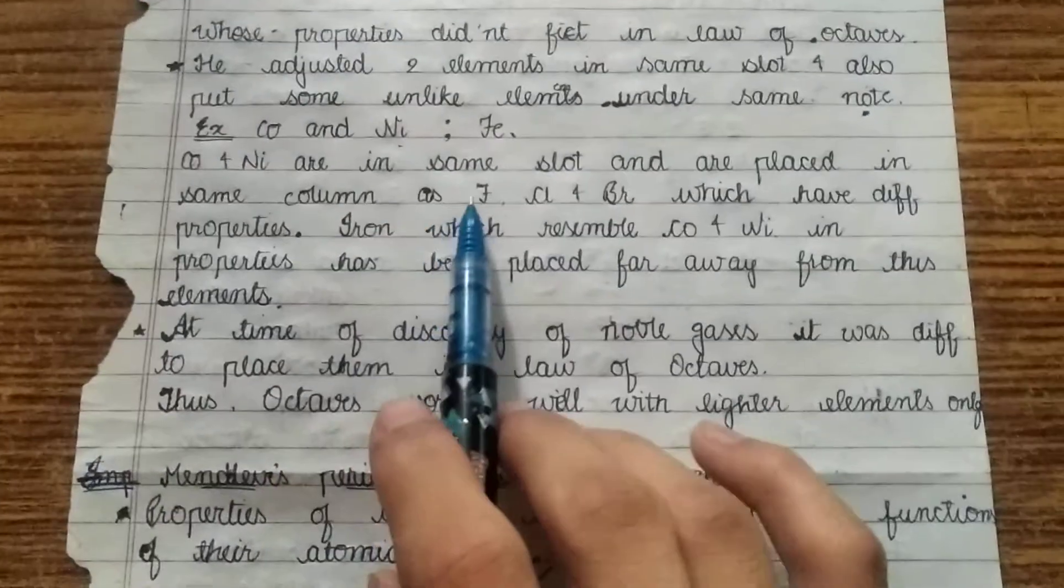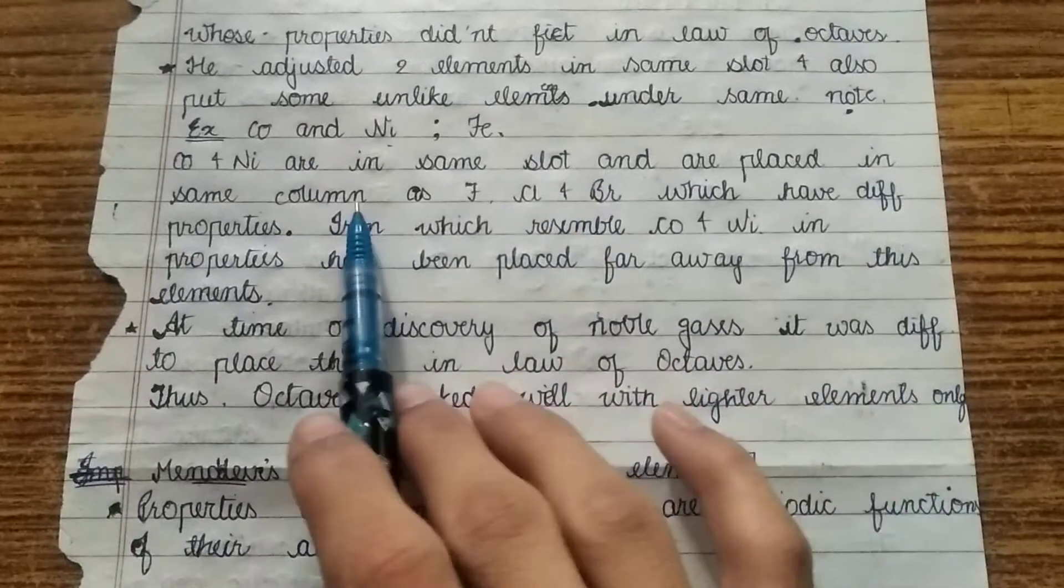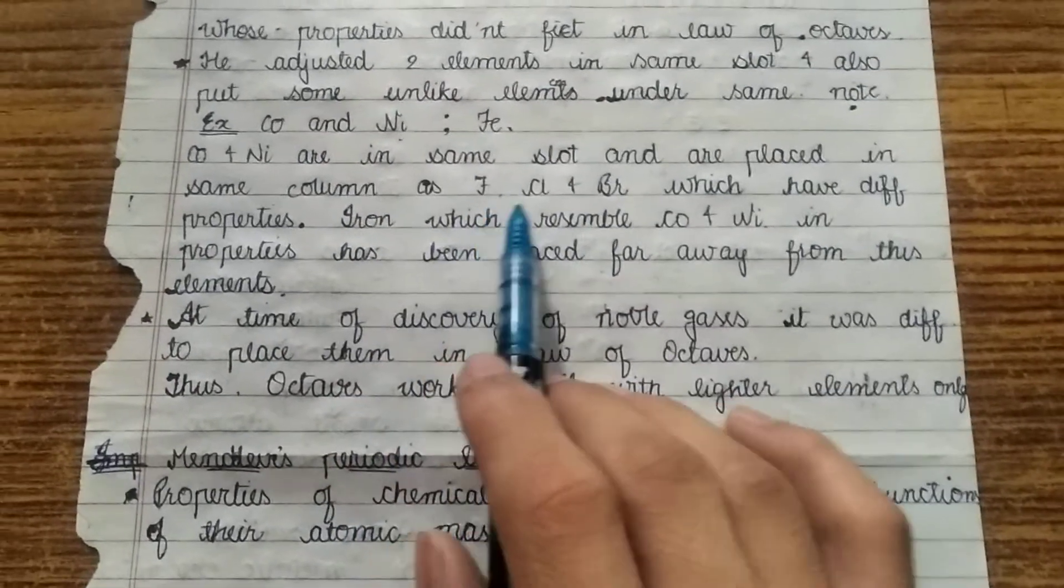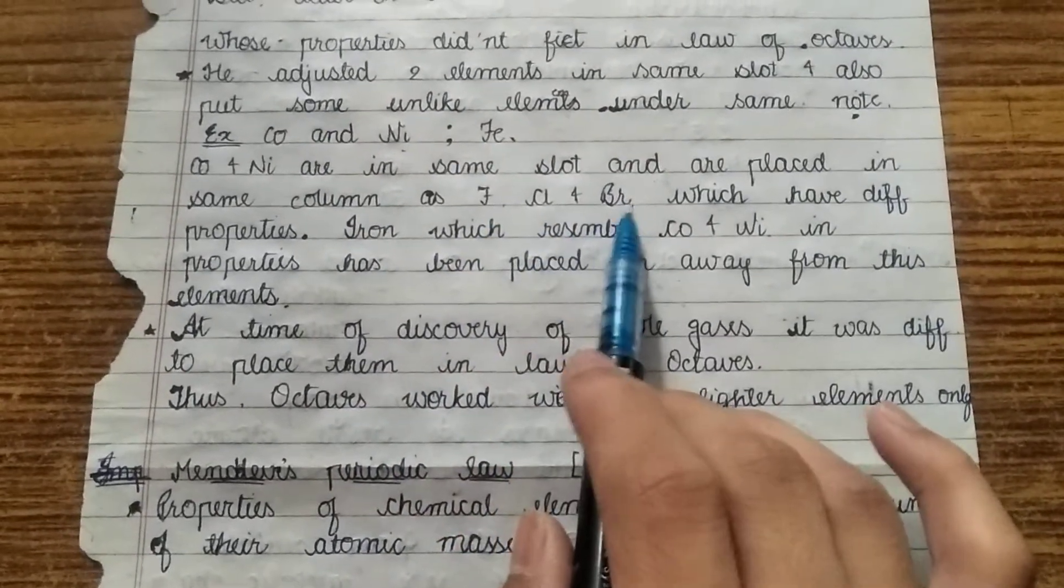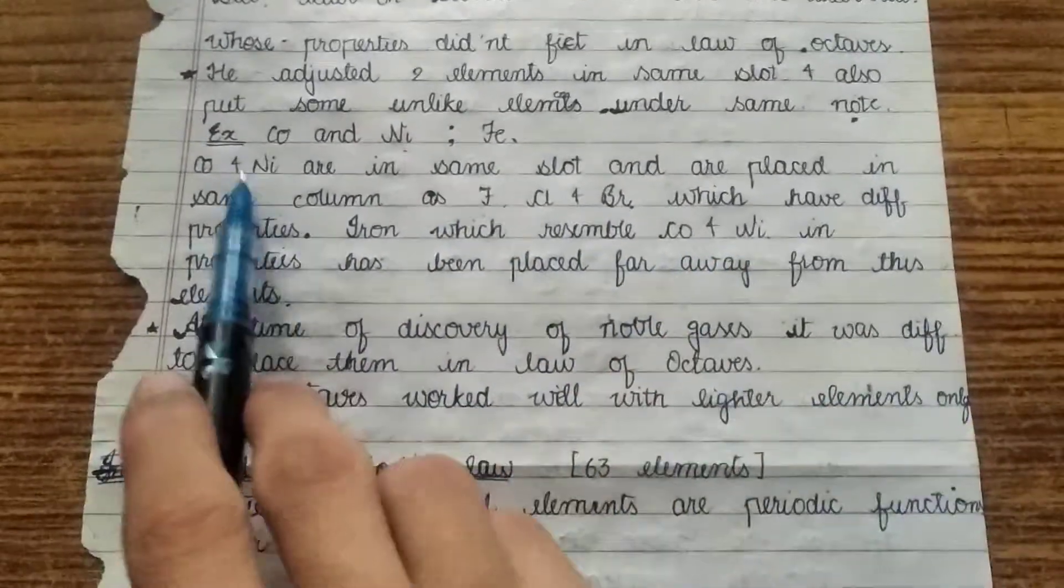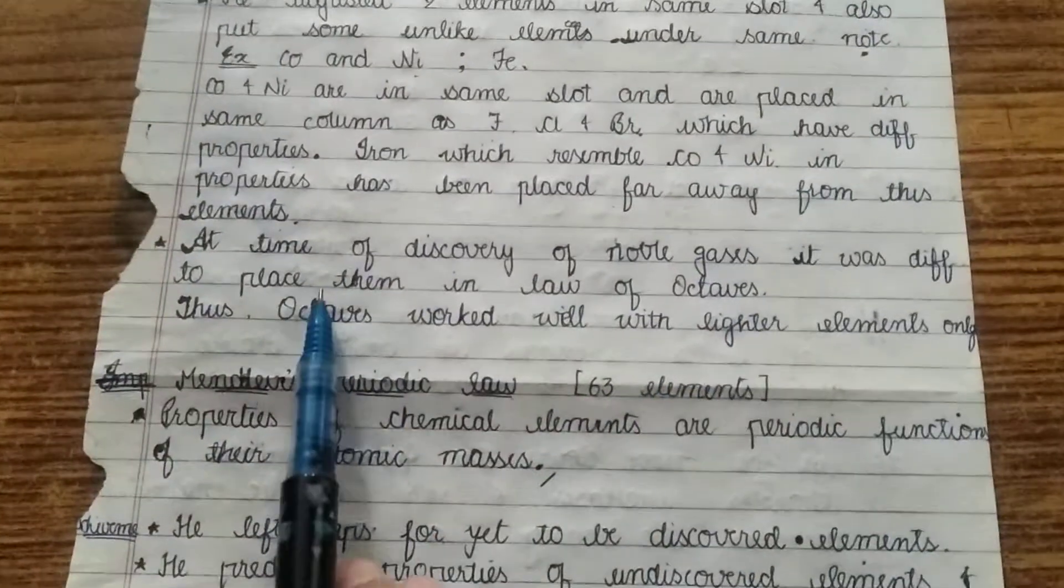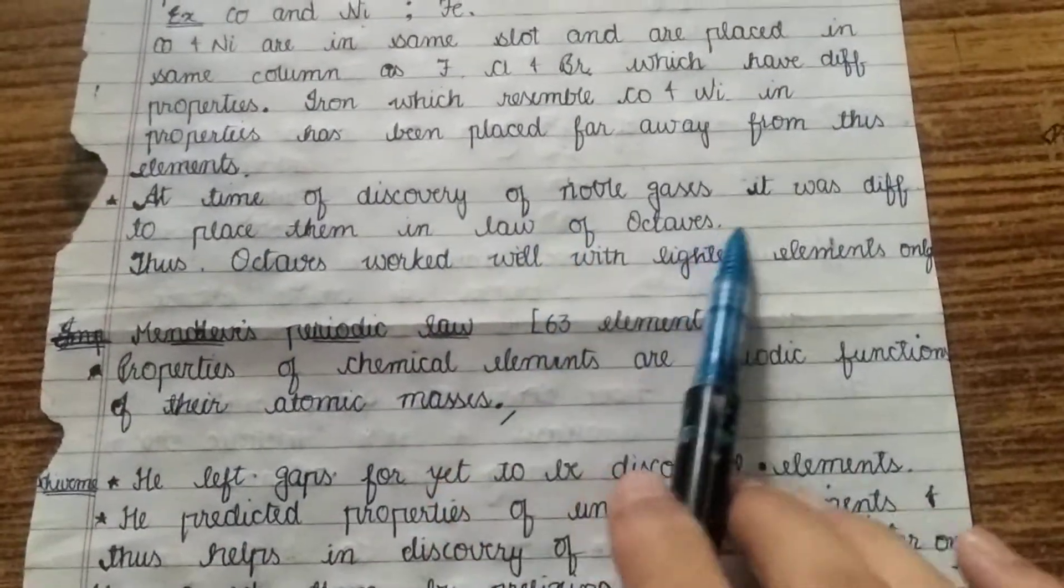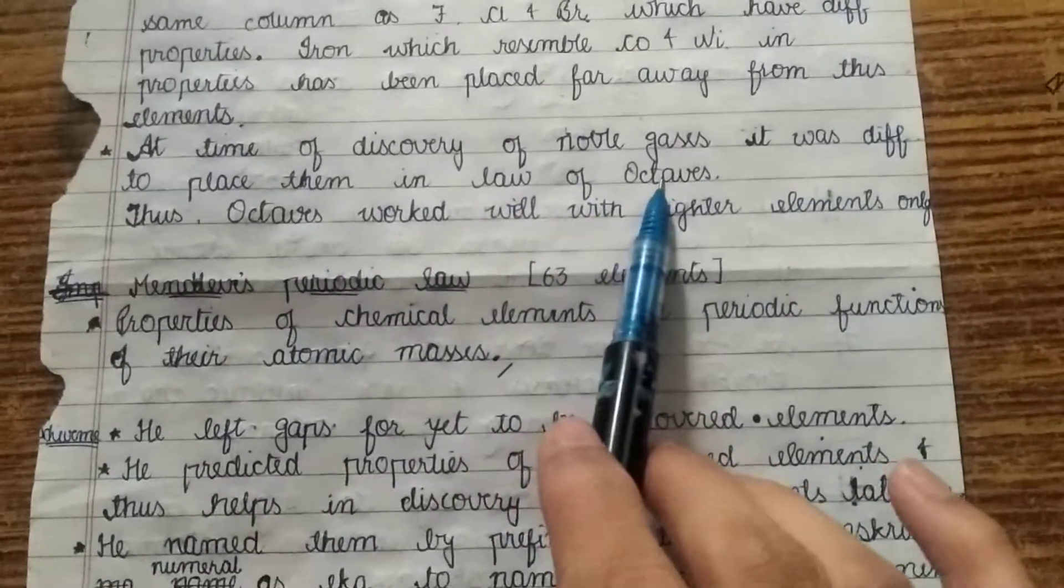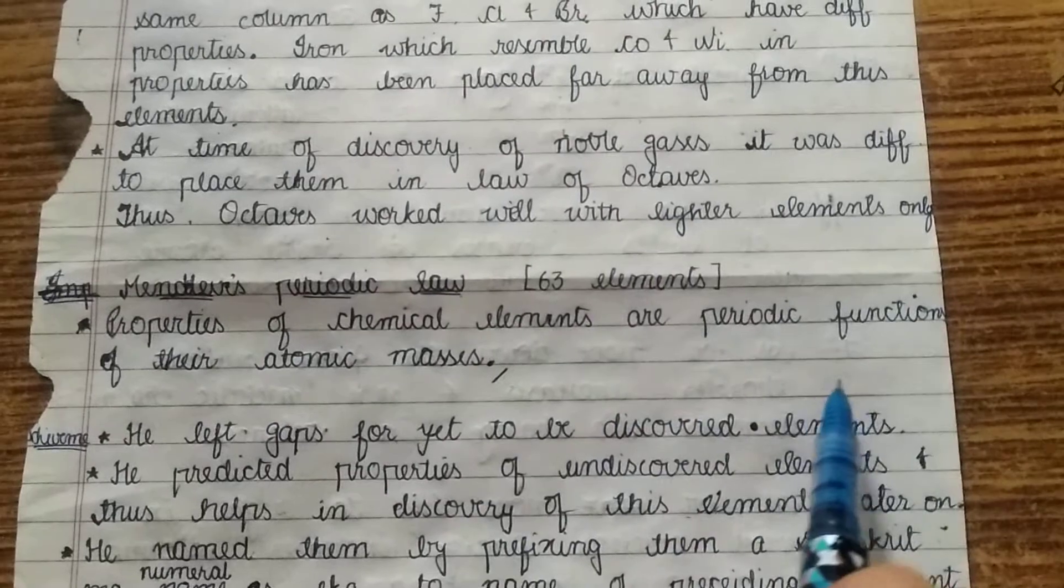An example is cobalt and nickel and iron. In this, cobalt and nickel are same in properties and are placed in same slot and column. And fluorine, chlorine and bromine, sorry iron, chlorine and bromine which have different properties. Iron which resembles cobalt and nickel have been placed far away from these elements. Last is at the time of discovery of noble gases it was difficult to place them in the law of octaves. Therefore, the law of octaves did not work for the lighter elements.